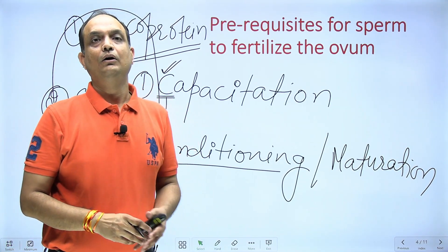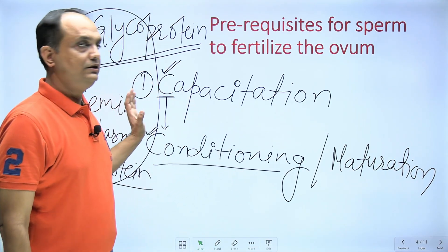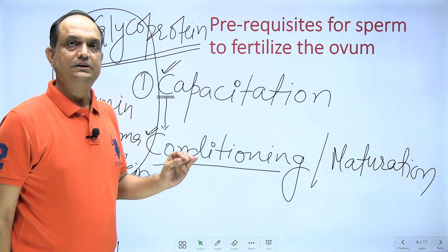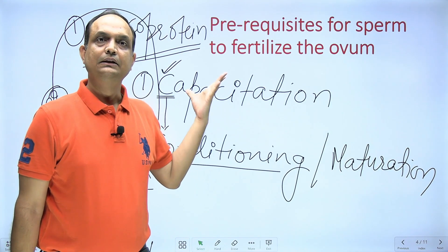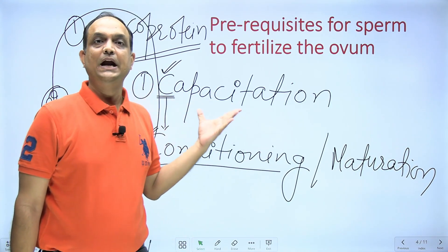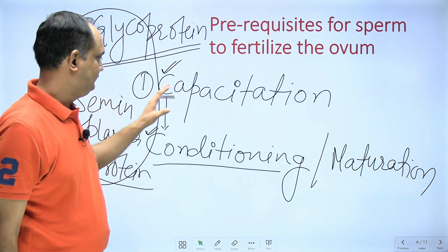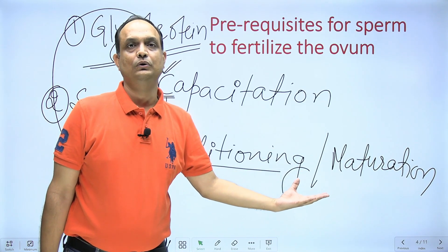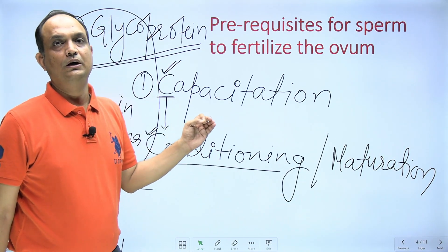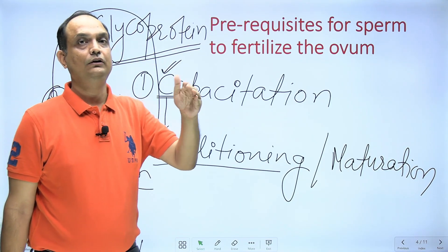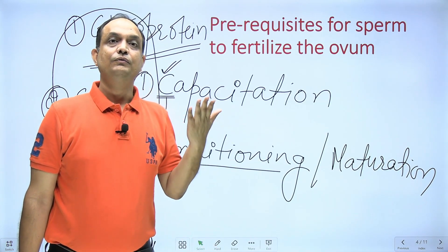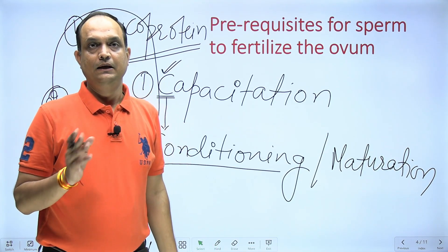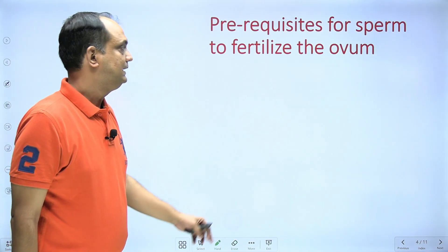The second thing removed is the semen plasma protein. These two things — glycoprotein coat and semen plasma protein — must be removed from the head of the sperm to mature the spermatozoa. Always write capacitation in bold letters, as it is a very important prerequisite. Capacitation is defined as the conditioning of spermatozoa, during which female mucosa enzymes remove the glycoprotein coat and semen plasma proteins from the sperm head.